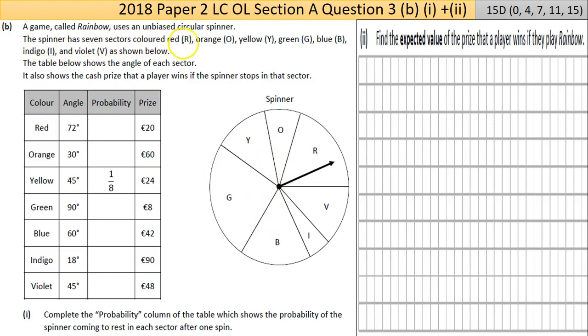The spinner has seven sectors colored red, orange, yellow, green, blue, indigo, and violet. The table below shows the angle of each sector. It also shows the cash prize that a player wins if the spinner stops in that sector. So you're shown here, for example, 45 degrees has a probability of 1/8 and you win €24. Where they got this 1/8: the angle of yellow here represents 45 degrees of the full circle. So they get this 1/8 by dividing 45 by 360, and you get 1/8.